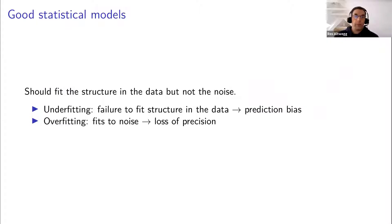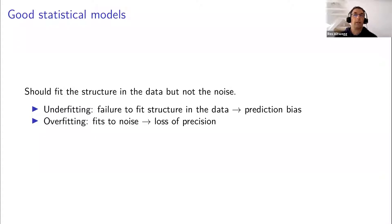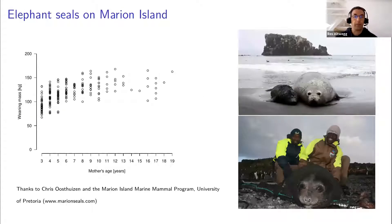A good statistical model should fit the structure in the data but not the noise. We have two problems to consider. The first is underfitting: the model fails to fit the structure of the data, giving biased predictions and a poor description of the structure we want to explore. The other problem is overfitting: fitting a model way too complex for your data, so it fits to the noise and we lose precision.